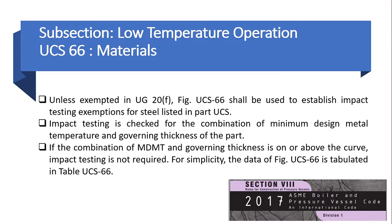In this topic, it mentioned that unless exempted in UG 20F, figure UCS 66 shall be used to establish impact testing exemptions for steel listed in part UCS. Impact testing is checked for the combination of minimum design metal temperature and governing thickness of the part. If the combination of MDMT and governing thickness is on or above the curve, impact testing is not required.